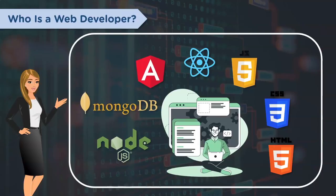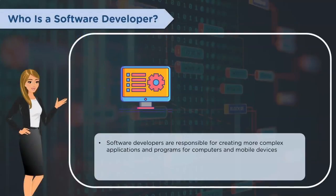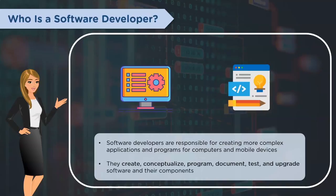Next, let's understand who a software developer is. Software developers are responsible for creating more complex applications and programs for computers and mobile devices. They conceptualize, program, document, test, and upgrade software and their components. Software developers invent, manage, and optimize computer programs that run on desktops, laptops, smartphones, and other mobile devices. These professionals write complex code that governs how desktop applications function, and they specialize in troubleshooting code bugs, updating user interfaces, creating new tools, and much more.